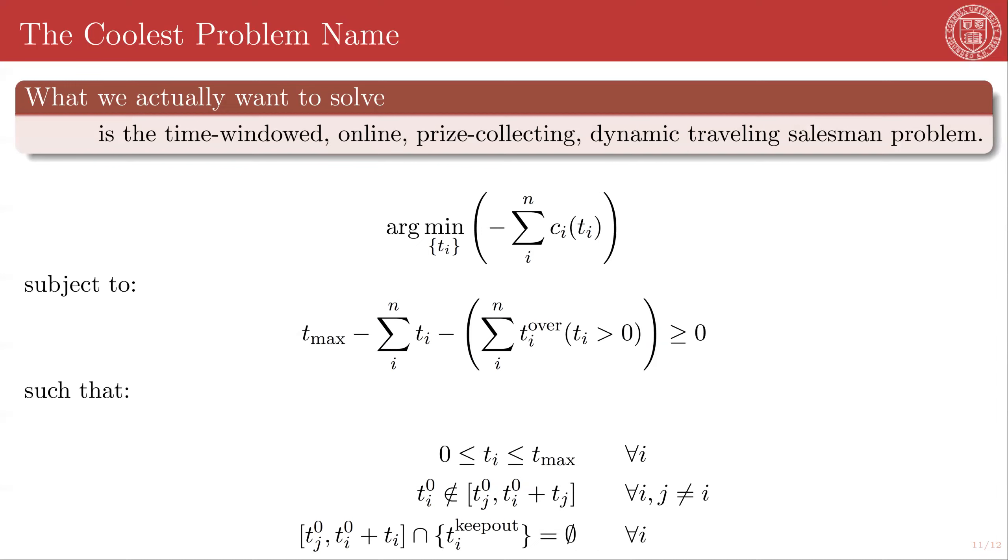I'm going to skip this and just kind of move on to the punchline, which is what we actually want to solve is something called the time windowed online prize collecting dynamic traveling salesman problem. This, in general, when you're scheduling these surveys, astronomical or otherwise, these are essentially traveling salesman problems. They're prize collecting traveling salesman problems because you are trying to amass utility as you go along and you can describe them as a directed graph where the nodes of the graph represent observations and the edges of the graph represent the cost of transitioning between observations.